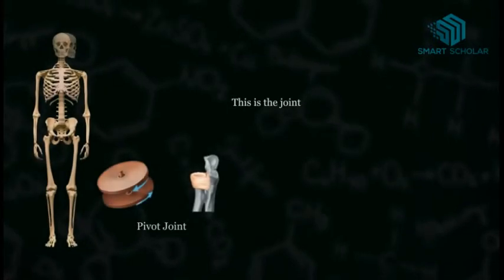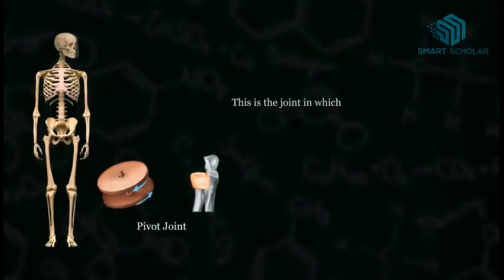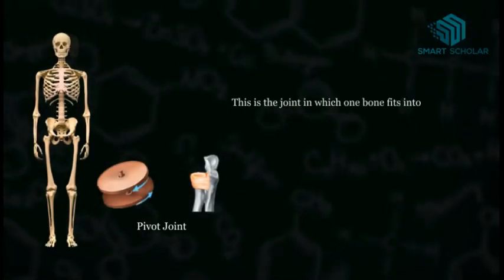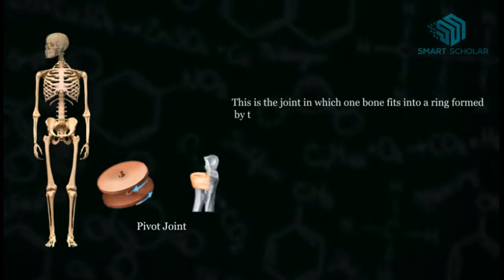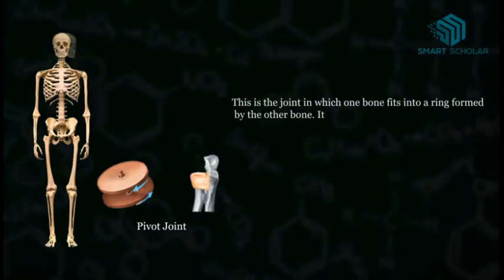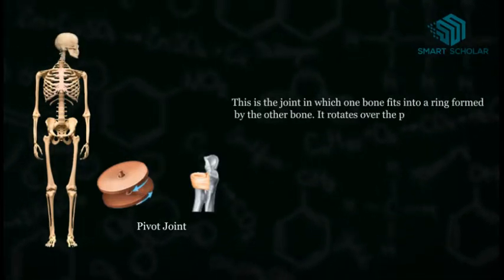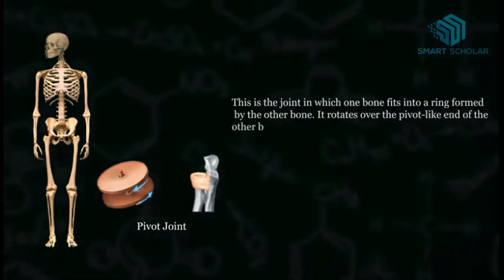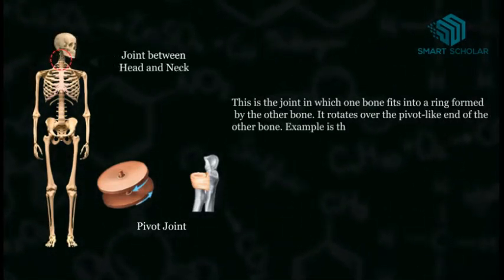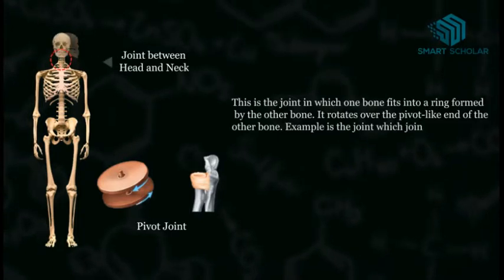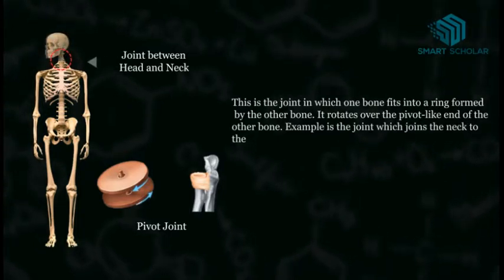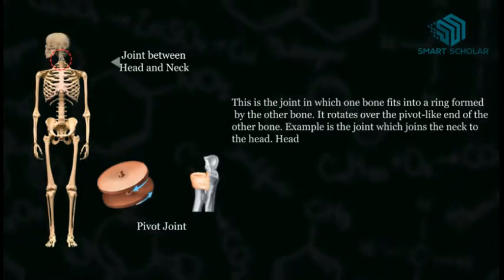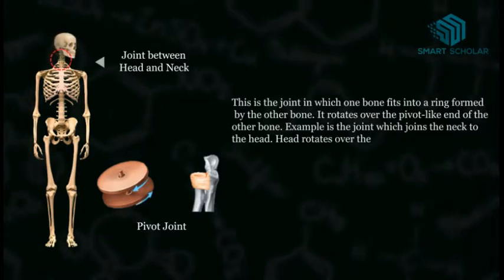Pivot joint. This is a joint in which one bone fits into a ring formed by the other bone, and rotates over the pivot-like end of the other bone. An example is the joint which joins the neck to the head — the head rotates over the neck.